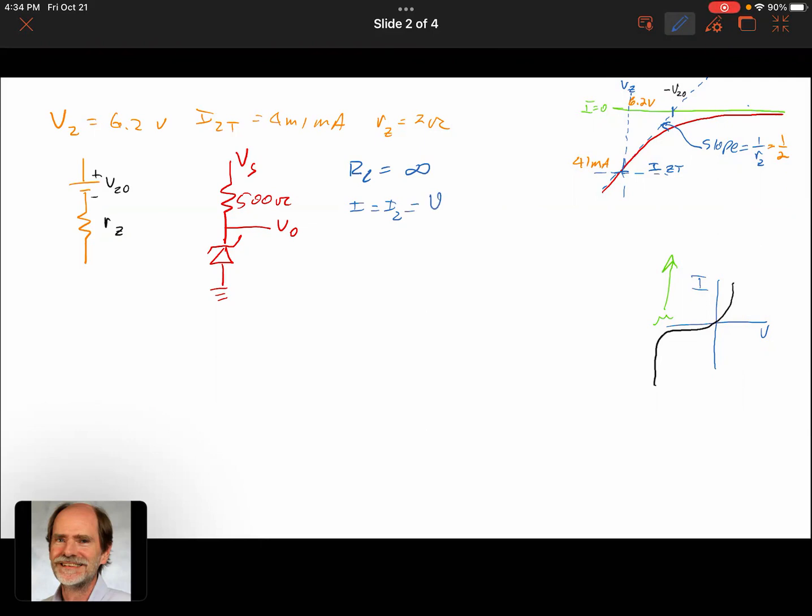So load is equal to infinity. I is equal to Iz, is equal to Vs minus Vz, the voltage on the Zener, divided by 500 plus Rz. And if Vs is equal to 10 volts, then if we solve for current, it should be 7.731 milliamps. And Vout would then be Vz-naught plus Iz times Rz, which would be 6.135 volts.